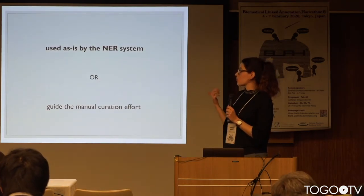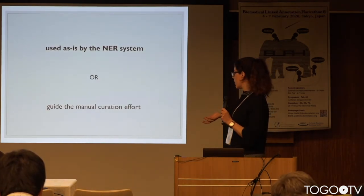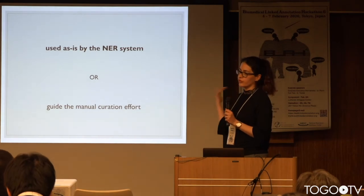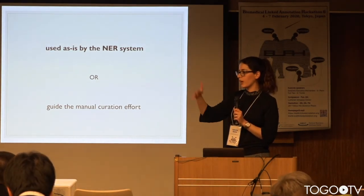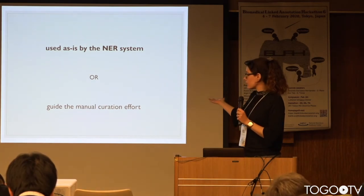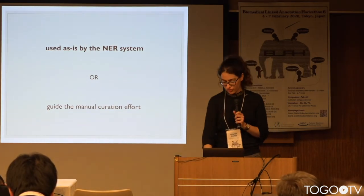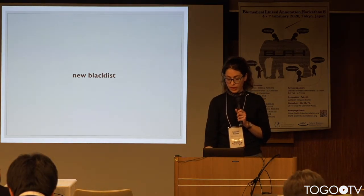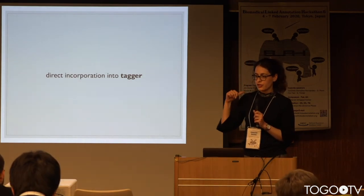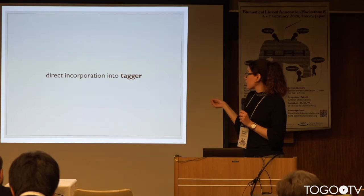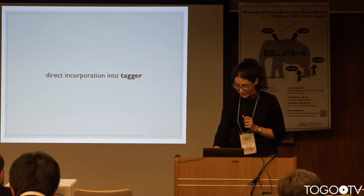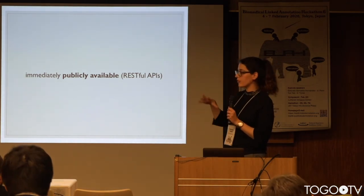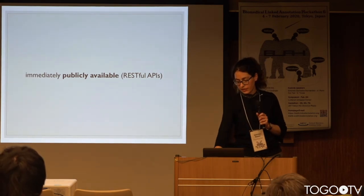After evaluation we will see if the results can be used as-is by the NER system we have, or if they can guide the manual curation effort. We aim for the first option — we hope the results are good enough to be incorporated automatically — but if not, it can at least help guide manual curation. The new blacklist will be directly incorporated into the tagger without affecting its speed, and since the tagger is available through RESTful APIs, all results will be immediately publicly available.